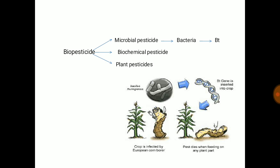Jaisa ki humne discuss kiya, biopesticide ko three main groups mein divide kiya gaya hai: microbial pesticide, biochemical pesticide, and plant pesticides. In this tutorial, we will focus more on microbial pesticide. Is diagram mein, left side mein crop is infected by European corn borer. But on the right side, Bacillus thuringiensis se isolate karke, humne gene plant mein insert kara di, jiske wajah se plant capable ho gaya pesticidal protein banane ke aur resistance show karne laga against a particular pest.